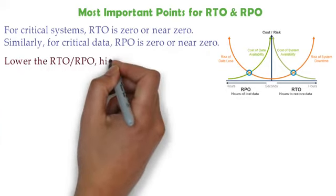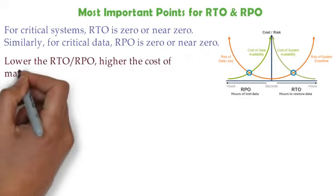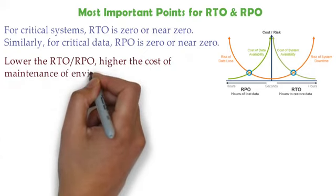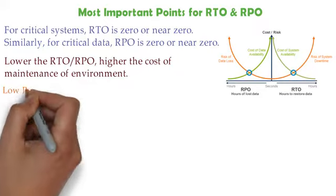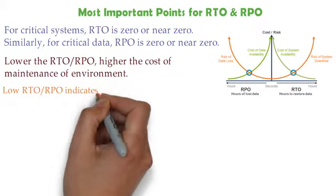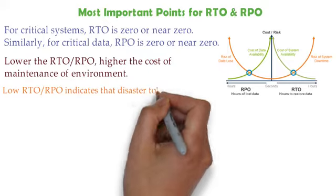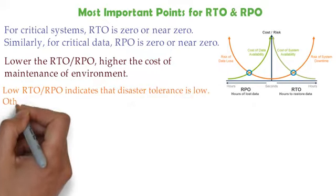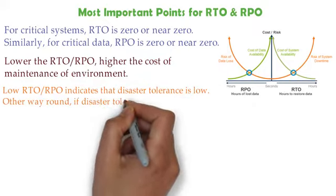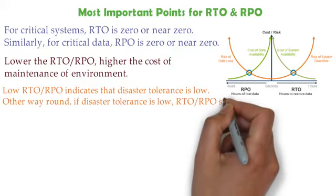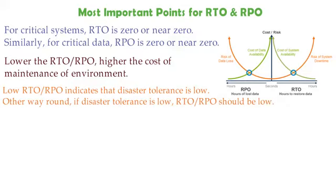The second important point is: the lower the RTO or RPO, the higher the cost of maintenance of the environment. Here there is a graph. The third point is low RTO or RPO indicates that disaster tolerance is low. The other way around, if disaster tolerance is low, RTO or RPO should be low.